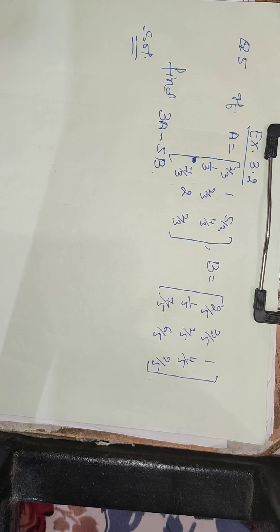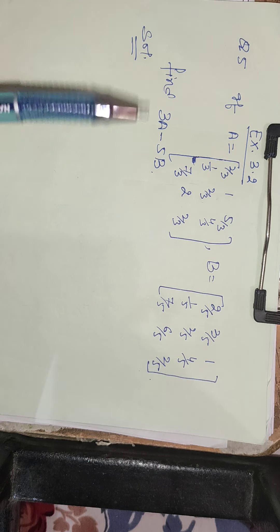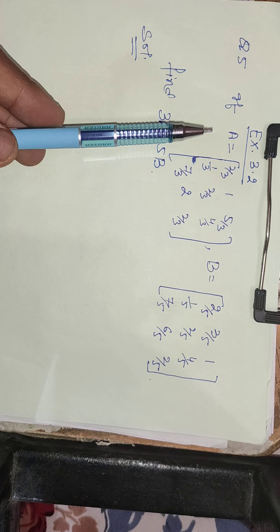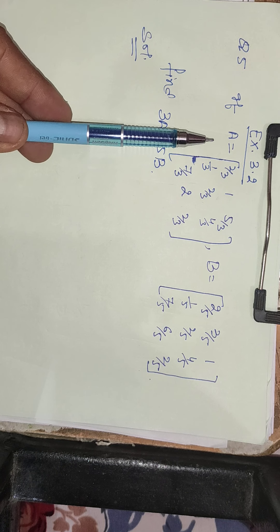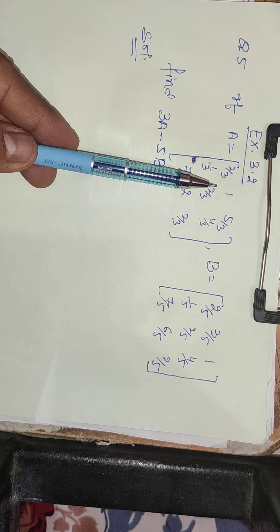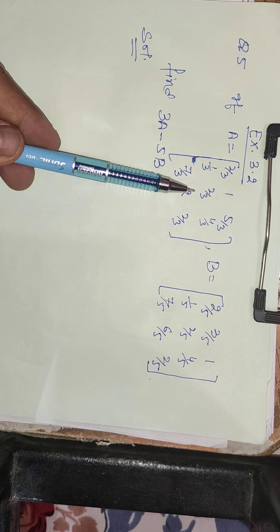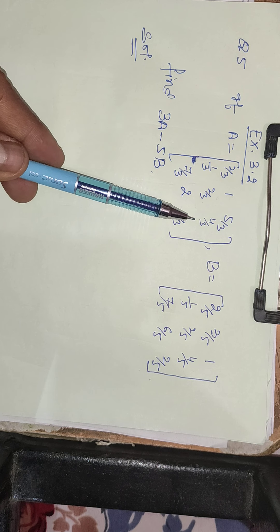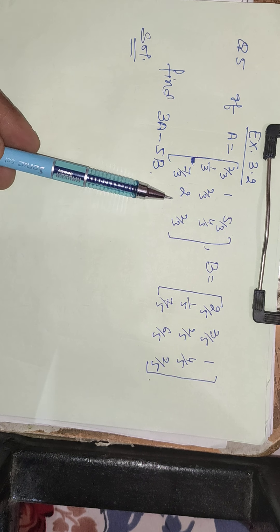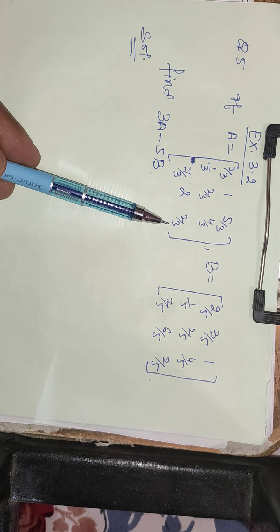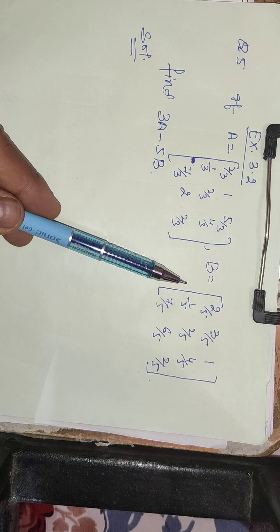Hello students, today we will go with question number 5 of Exercise 3.2, in which we have 2 matrices given. Matrix A has values: 2/3, 1, 5/3, 1/3, 2/3, 4/3, 7/3, and 2/3. And the other matrix B...